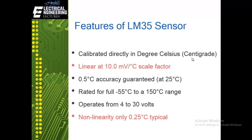The features of the LM35 sensor include: a linear output of 10 millivolts per degree Celsius; accuracy up to 0.5 degrees over the full scale range; a measurement range from minus 55 degrees to 150 degrees Celsius; an operating voltage of 4 to 30 volts; and a non-linearity of only 0.25 degrees over the full range.